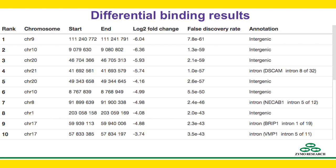If the experiments were conducted with replication, we can perform statistical analysis to identify regions where bindings are statistically different among different conditions — a question that many researchers are often most interested in. This screenshot shows a top-10 list of regions with differential binding. In addition to the chromosome and genomic coordinates, useful information such as fold change, false discovery rate, and annotation of the region are generated for each one of them.